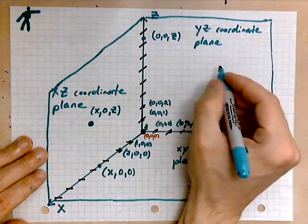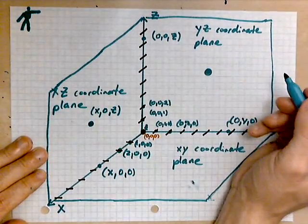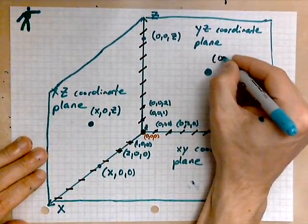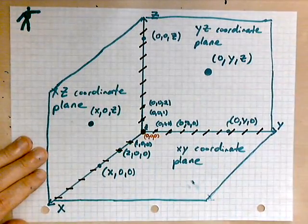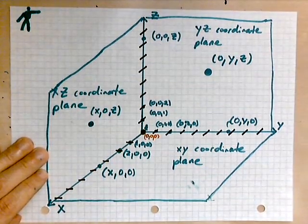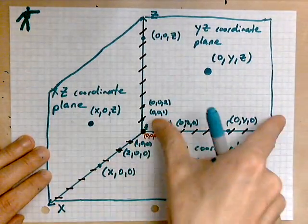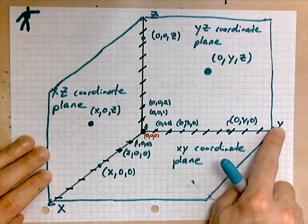The back plane, the x, I'm sorry, the y, z coordinate plane. If I choose a point in that plane, its coordinates are zero, y, z. X is zero because we are not behind, nor are we in front. We are just on the plane, which is made by the z and y axis like this.